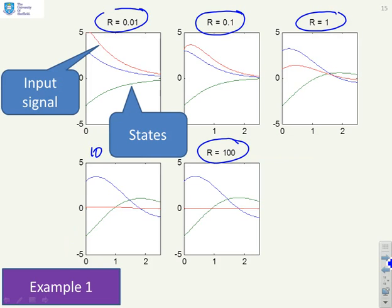You can see that with R equals 0.01, the input, which is here in red, is reasonably smooth—it's not aggressive—and the states converge at a reasonable rate. If I choose R equals 0.1, the input is slightly different, but you'll notice that the states converge very slightly quicker. That's what you would expect.